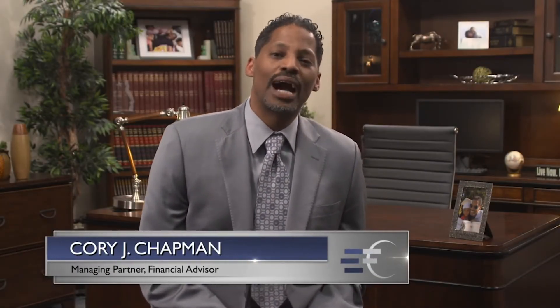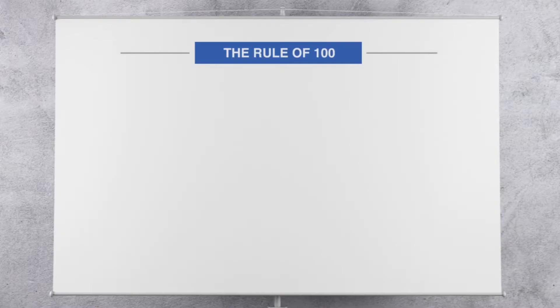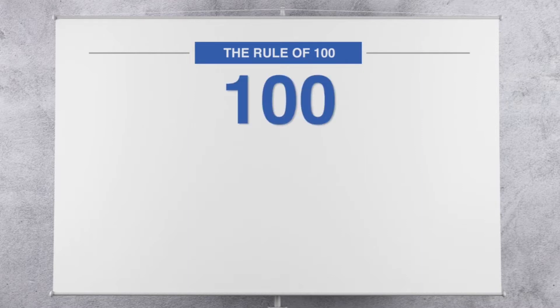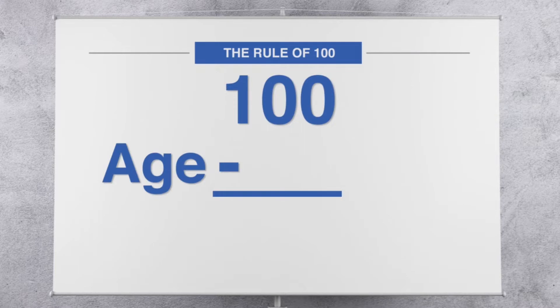Many people are familiar with the Rule of 100 as a tool for determining general guidelines for proper balance of your financial assets. The Rule of 100 works like this: you take your age and subtract it from 100, so 100 minus your age gives you some number.